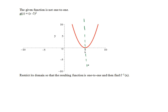The two possibilities would be to restrict the domain to x less than or equal to 5, or x greater than or equal to 5. Either of these would be the largest possible domain that would still end up being 1 to 1.